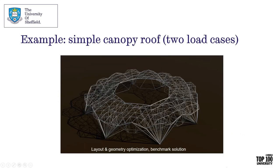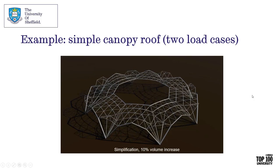Applying this to a larger problem — a simple canopy with a couple of load cases — the initial layout optimization gives a messy structure. Using this simplification method with a 10% threshold gives a much cleaner structure — something you could share with others in the team as a viable candidate design.